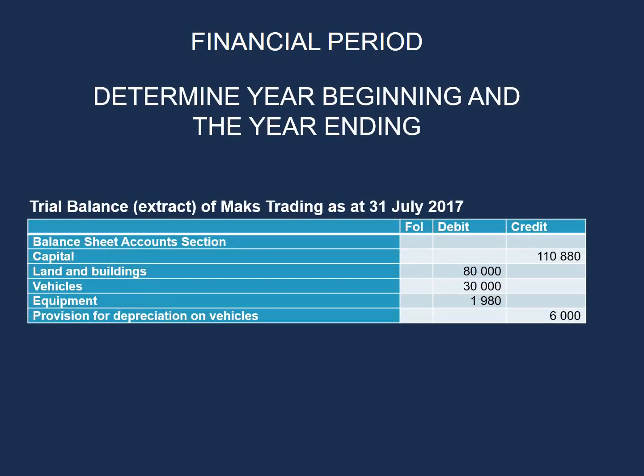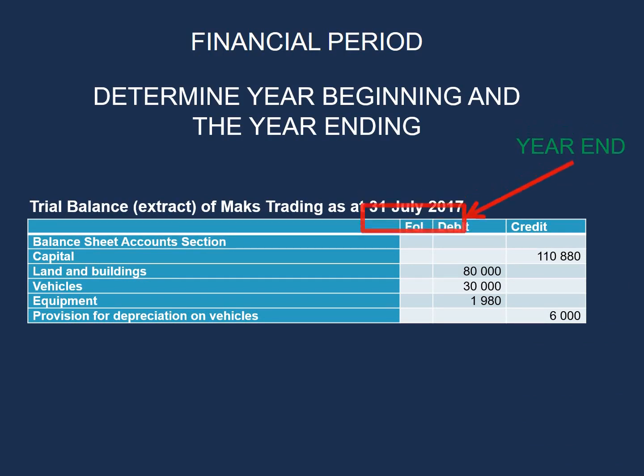Here we have a trial balance extract of Marks Trading as at 31 July 2017. The year end is 31 July 2017, and we need to determine what the year beginning is. We do that by changing three elements in the date: we change the day, we change the month, and we change the year.